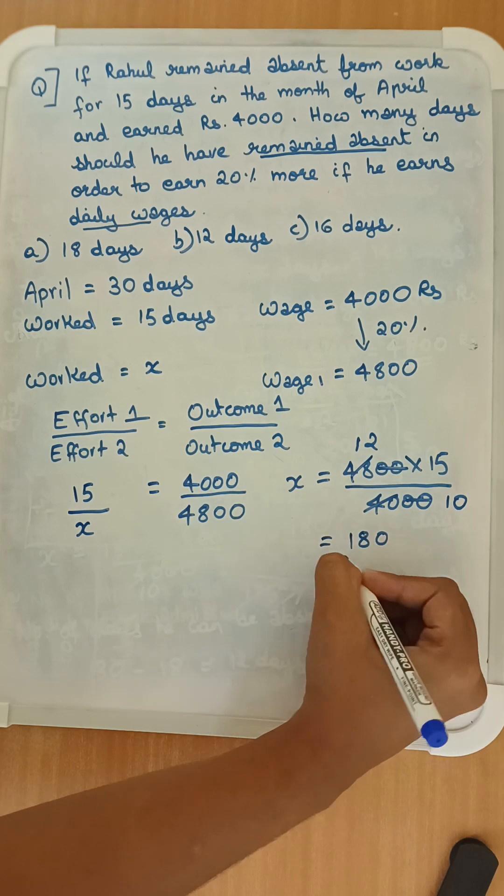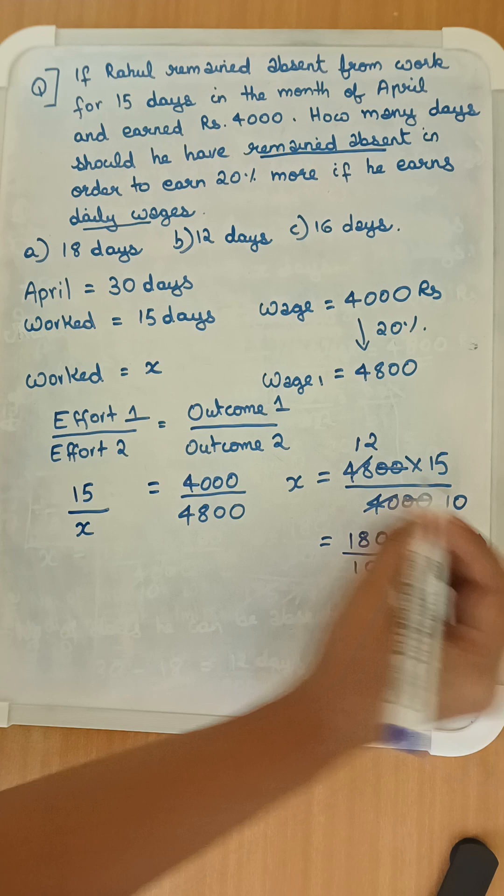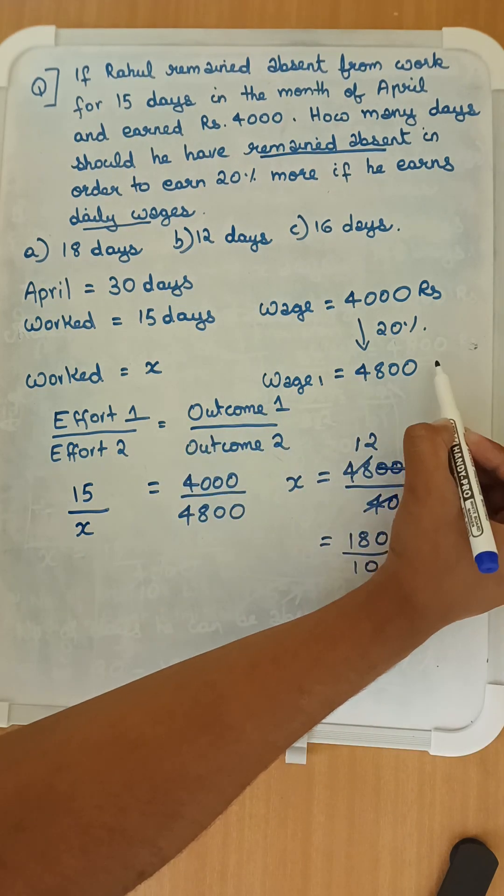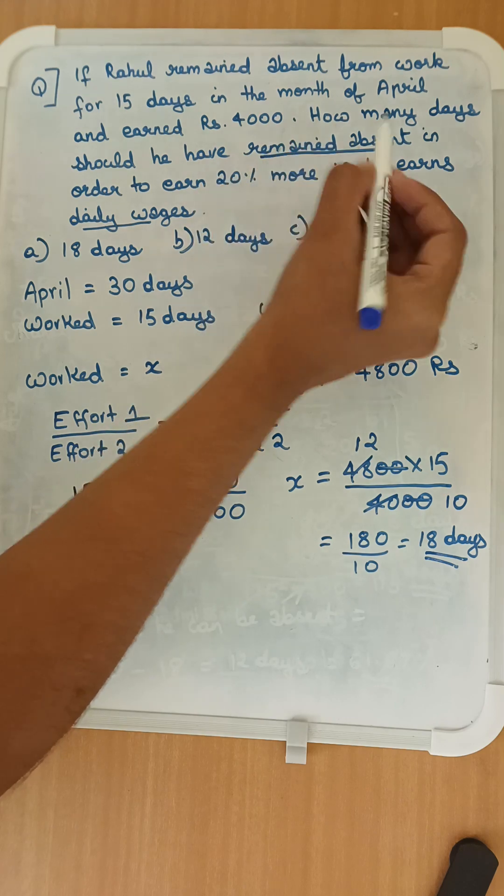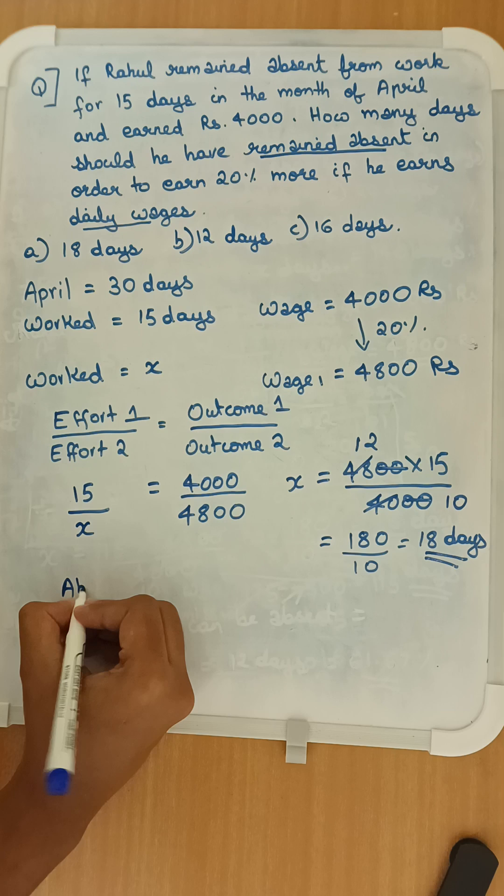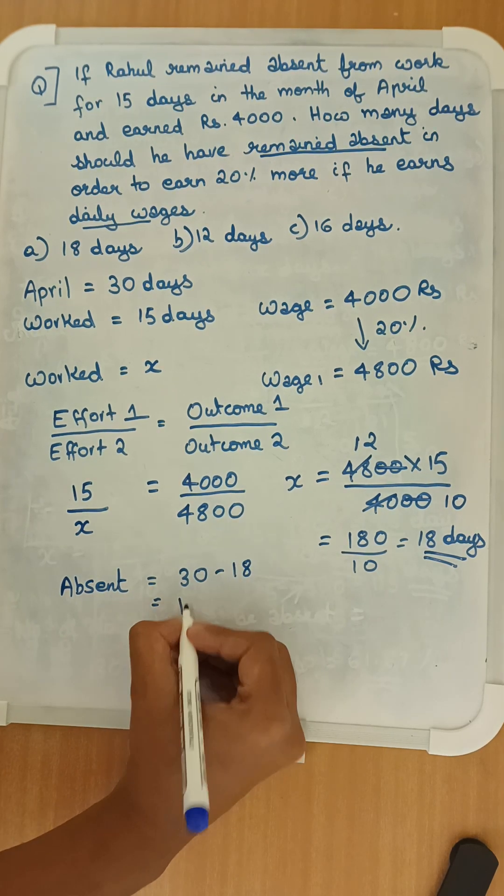12 into 15 is equal to 180 by 10, which equals 18 days. So if Rahul worked for 18 days, he would earn a wage of 4,800. But in the question they have asked how many days can he remain absent to earn 4,800, that would be equal to 30 minus 18, that is 12 days.